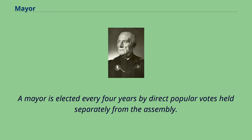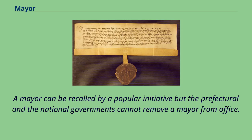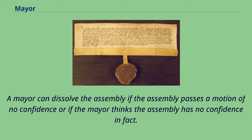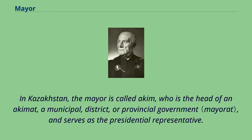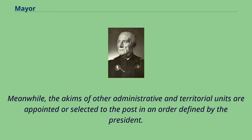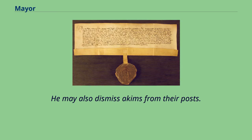A mayor can be recalled by a popular initiative, but the prefectural and national governments cannot remove a mayor from office. Towards the assembly, the mayor prepares budgets, proposes local acts, and has veto power on local acts just approved by the assembly, which can be overridden by two-thirds assembly support. A mayor can dissolve the assembly if the assembly passes a motion of no confidence. In Kazakhstan, the mayor is called Akim, who is the head of an Akimat — a municipal, district, or provincial government — and serves as the presidential representative. Akims of provinces and cities are appointed by the president on the advice of the prime minister, while Akims of other units are appointed in an order defined by the president.